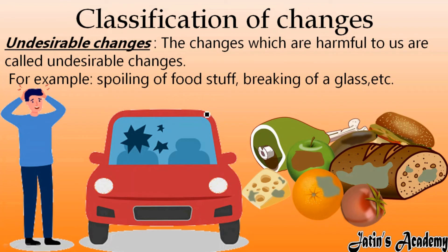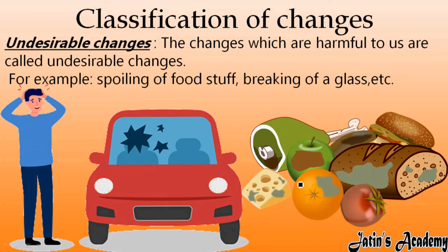As the name suggests, undesirable changes are changes which are harmful for us. For example, if by mistake you broke the mirror of your car, you are going to be in trouble — these kinds of changes are undesirable. Other examples are breaking of glass, and spoiling of food — if by mistake food gets spoiled, that is also an undesirable change that is harmful for us.